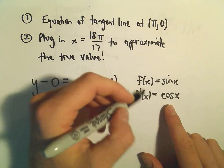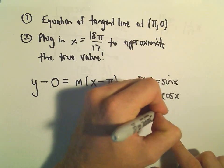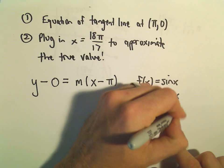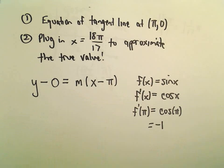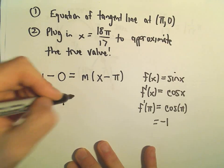And to get the slope, we have to plug in the x coordinate of π. So f prime of π, that's going to be cosine of π. But cosine of π just equals negative 1. So now I know my slope, it's going to be negative 1.